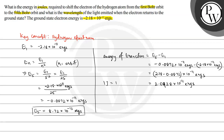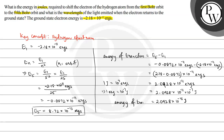Since 1 erg is equal to 10 raised to the power minus 7 joules, converting the result gives us 2.0928 multiplied by 10 to the power minus 18 joules.